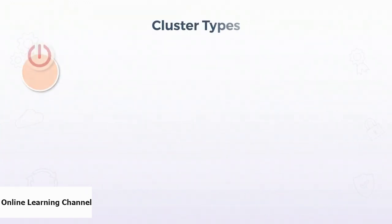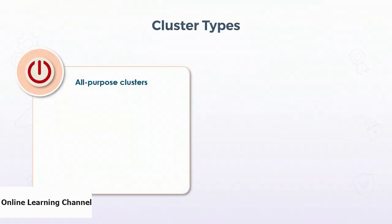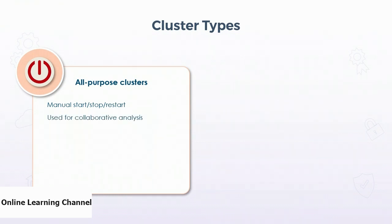There are two cluster types in Databricks. All-purpose clusters are not dedicated to any one process. Users can manually start, stop, and restart an all-purpose cluster. You can also call underlying REST APIs to automate the creation and management of all-purpose clusters. They're used for collaborative analysis. For example, if a data scientist is creating a notebook to collaborate with colleagues, she can spool up an all-purpose cluster and choose it as the cluster for her notebook to run on, or she can choose an existing cluster. Several notebooks can be run on a single cluster.